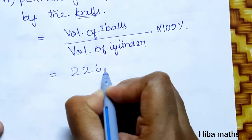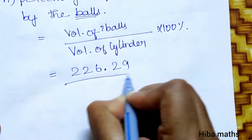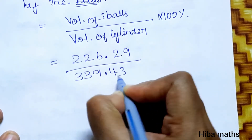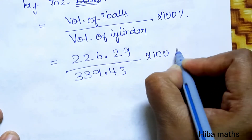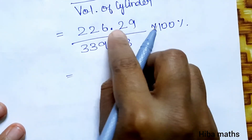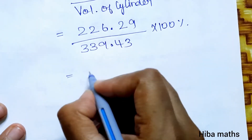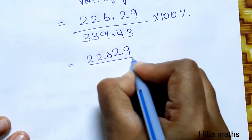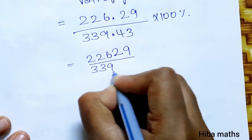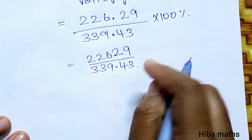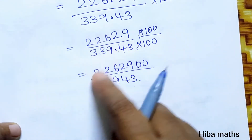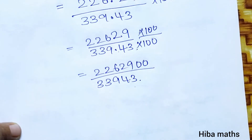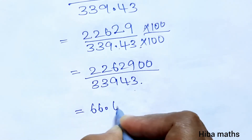Percentage of the volume occupied by balls: (volume of 2 balls ÷ volume of cylinder) × 100%. That is (226.29 ÷ 339.43) × 100, which equals 66.6676...